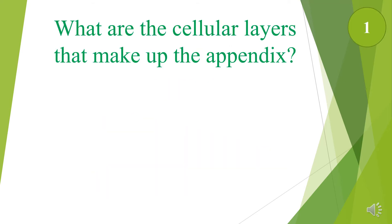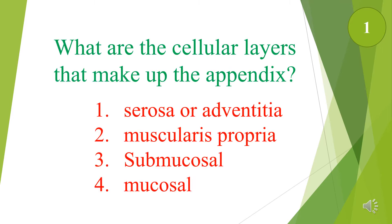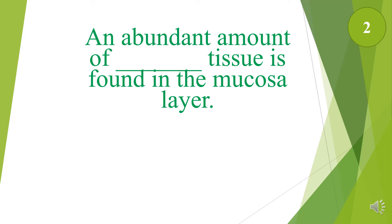What are the cellular layers that make up the appendix? They are cirrhosa or adventitia, muscularis, subserosa, submucosal, and mucosal layers. An abundant amount of what tissue is found in the mucosa layer? The mucosa layer is abundant in retiform tissue.